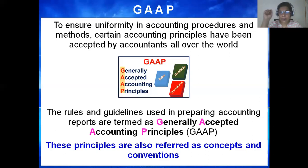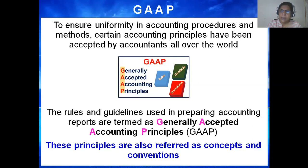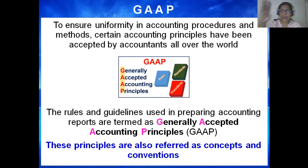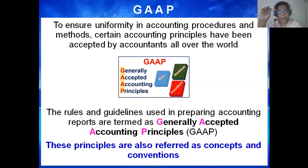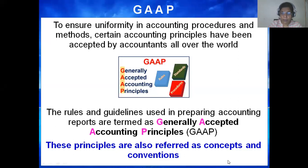The rules and guidelines used in preparing accounting reports are termed as Generally Accepted Accounting Principles. These principles are used as guidelines while we prepare accounting reports. The process of accounting is: voucher, journal, ledger, trial balance, final account — meaning trading P&L and balance sheet. In all these steps, the principles are to be followed. These rules are known as GAAP and are also known as concepts and conventions.